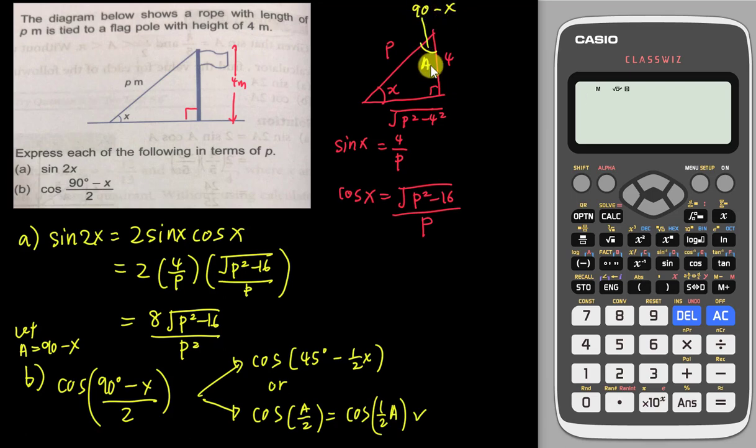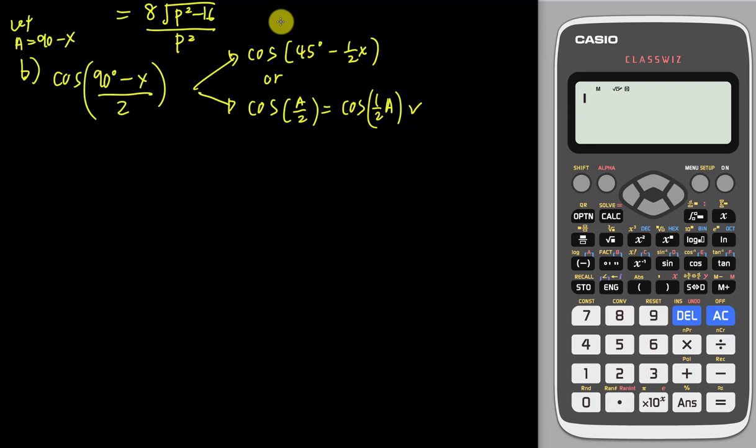All right, if this is a, so the half angle formula tells me cos(a/2) will equal to square root of cos a plus 1 over 2. All right, but right now we don't have the cos a. Just now we only have cos x. So I want to find what is cos a here.